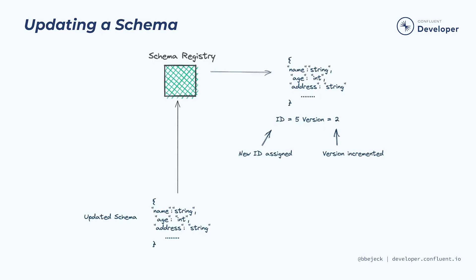Alright, so we've created and registered schemas. What do we do when we need to update a schema? Well, you can actually use any of these register methods to update the schema as well. Provided you're making compatible changes, which we'll cover in an upcoming module, Schema Registry will simply assign a new ID to the schema and increment the version number. While the new ID is not guaranteed to be in sequential order, the version number will always be incremented by one. And as you'll see in a second, the version number is actually more important than the ID when viewing the schema.